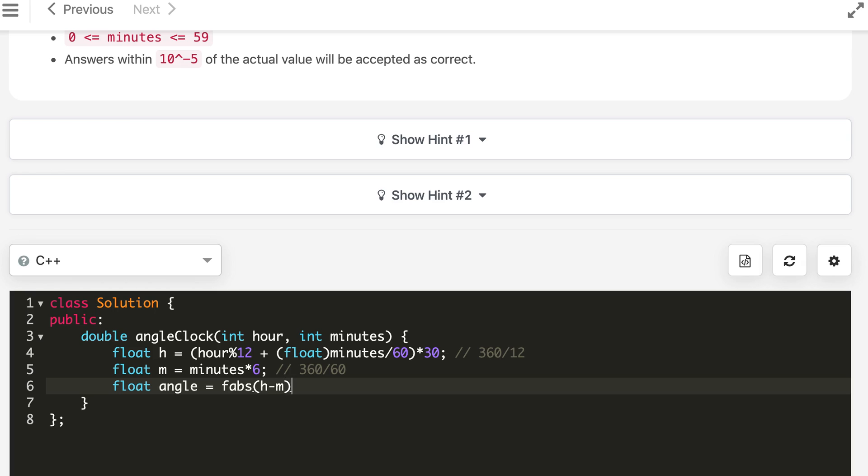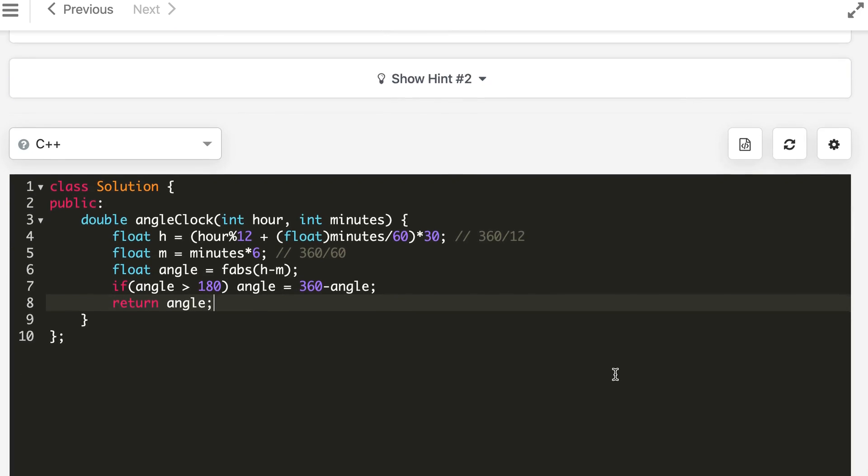And float angle equal to, we will take the absolute values, H minus M. And if angle is more than 180, then angle equal to 360 minus angle. And finally we will return angle. And let's see.